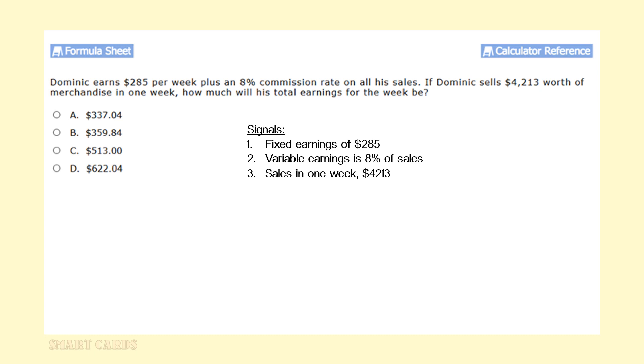Fixed earnings of $285. We have variable earnings, which is 8% of his sales. And we have how much he sold in a week, which would be $4,213. Let's calculate the solution. The solution is going to be composed of his total earnings, which would equal his fixed earnings plus his variable earnings. His fixed earnings, he gets $285 regardless of whether he makes sales or not. Plus his variable earnings, which would be 8% of the $4,213.